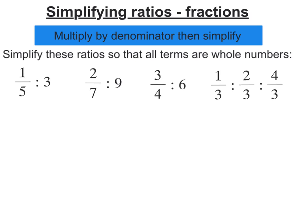So to simplify them, I need to make sure they're left with whole numbers in the most simple term. How we do that is, as it says up here, we're going to multiply by the denominator of your fraction and then try and simplify.